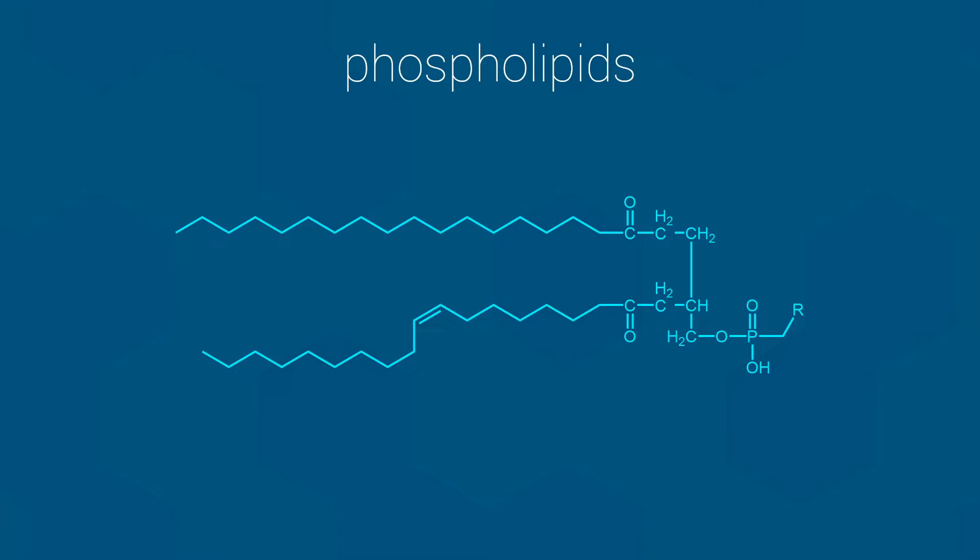The primary subunit of a cell membrane is a type of lipid that we call a phospholipid. The general structure is shown here, and it comprises two important regions. The first is a head region that contains a number of polar bonds, and often ionic charges. For this reason, we refer to the head region as the polar head. Attached to the head are two tails that consist entirely of carbon and hydrogen bonds. This makes the tails completely nonpolar, and thus we refer to them as the nonpolar tails.